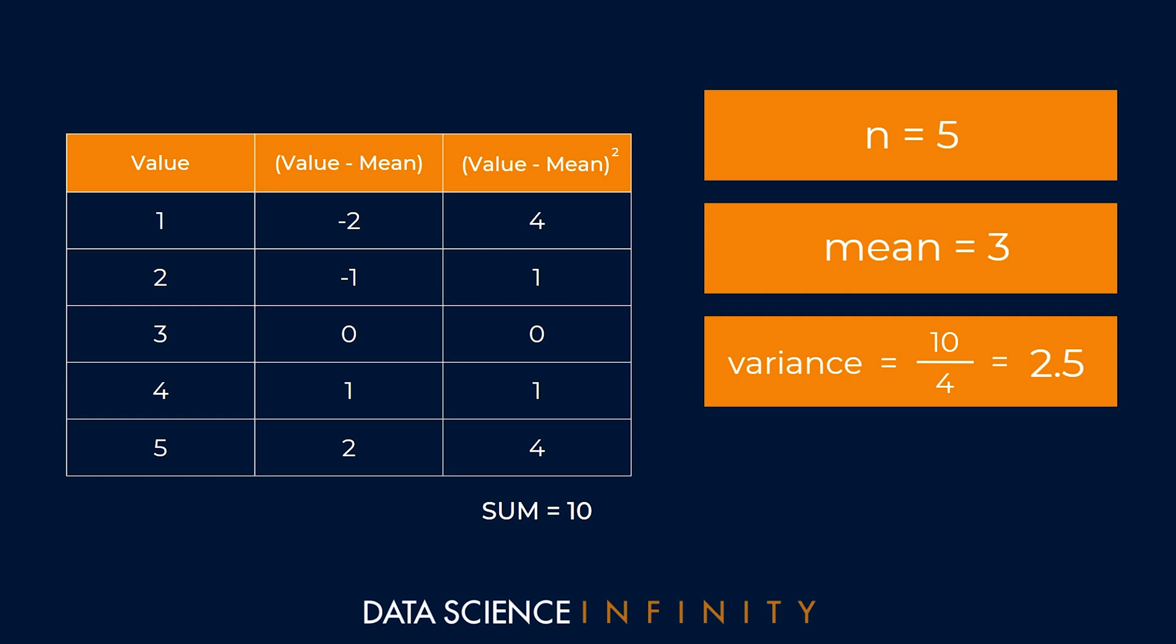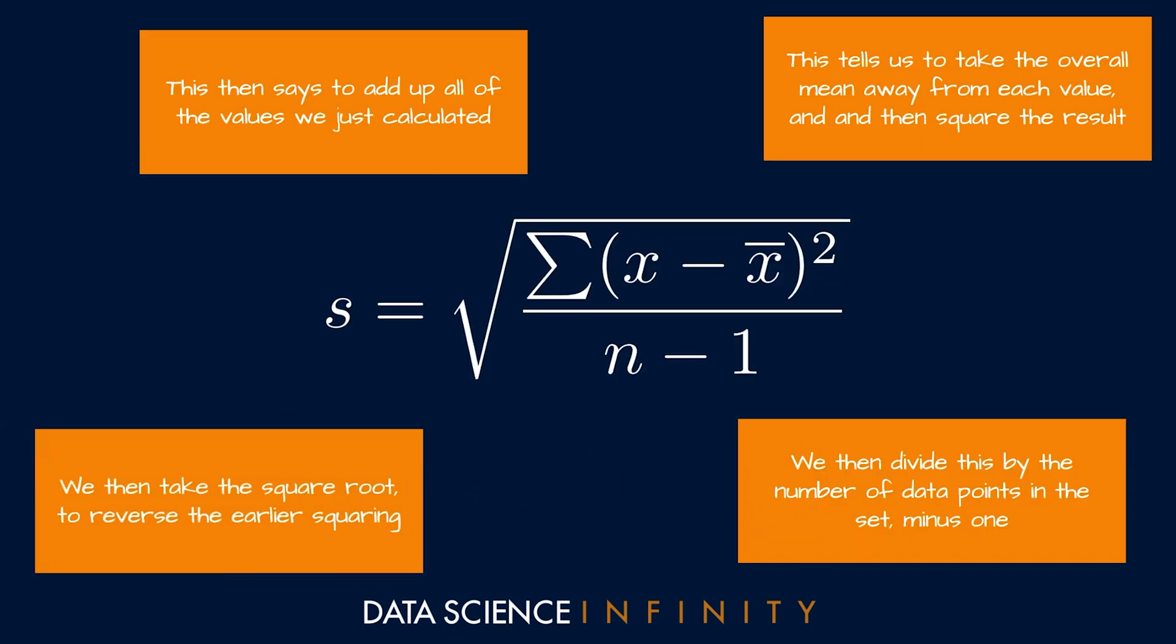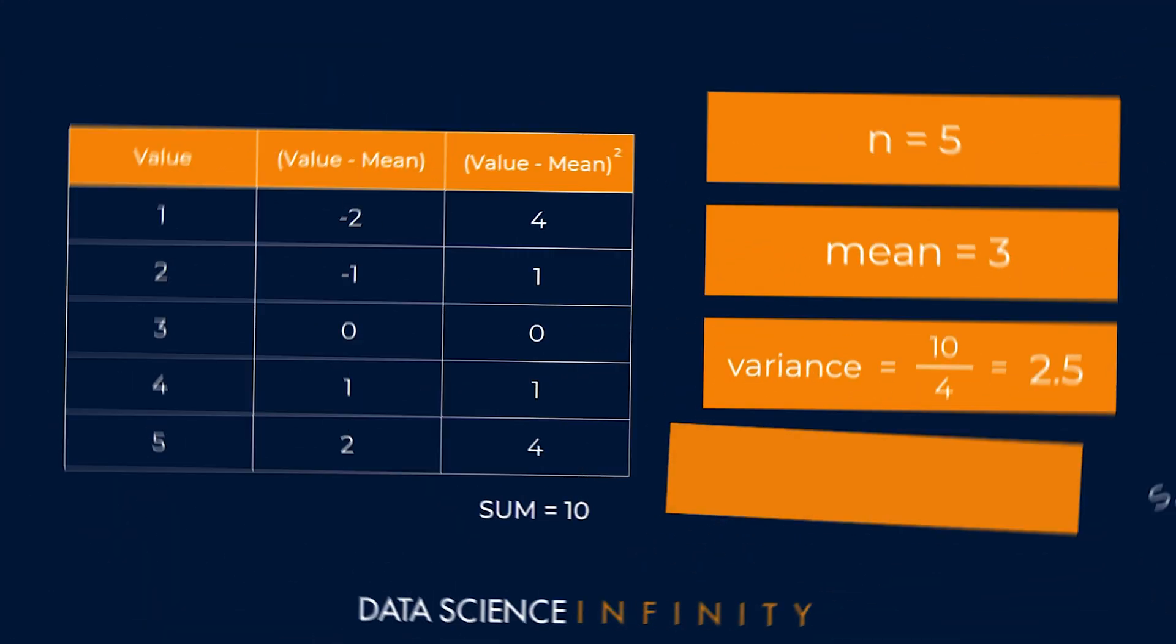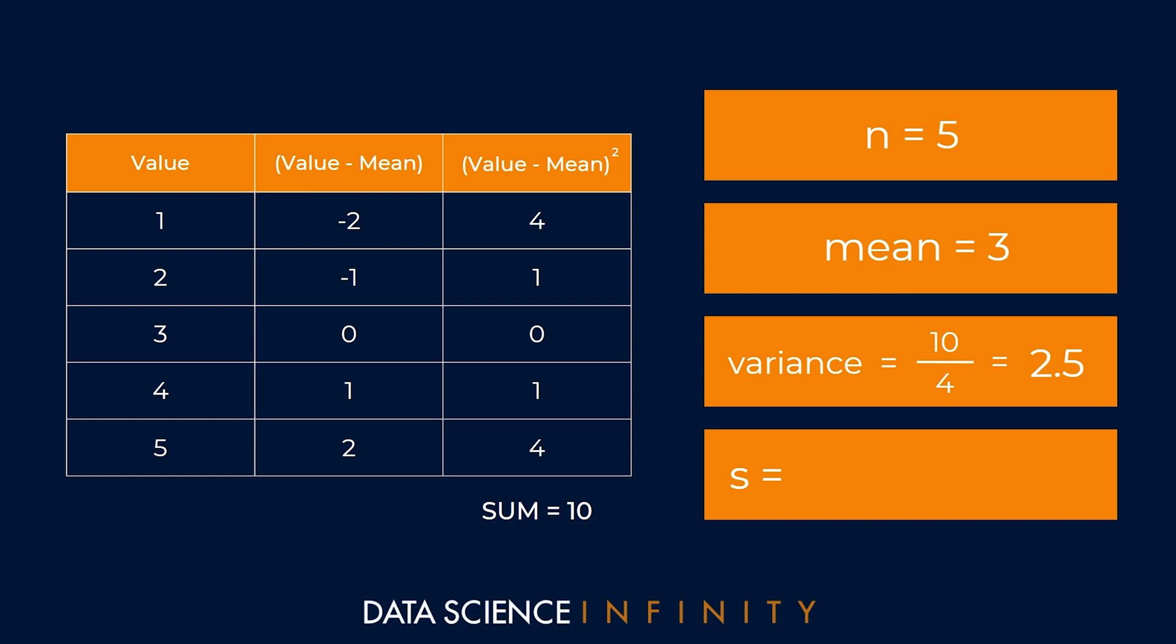10 divided by 4 gives us a mean squared deviation or variance value of 2.5. From here, the last part of our formula tells us to take the square root of this number. And thus, the standard deviation of our sample is the square root of 2.5, which is equal to 1.581.